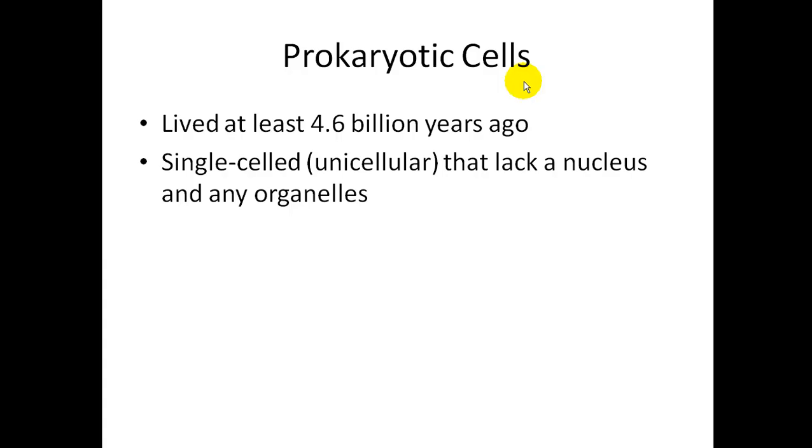There are two different types of cells: prokaryotic cells and eukaryotic cells. Prokaryotic cells we're actually going to learn in our next chapter because these are our bacteria cells. These cells lived a long time ago, they're the oldest cells around. They lived at least 4.6 billion years ago. They are single-celled, meaning they are unicellular, which means they are only one cell big. And they do not have a nucleus. That's what you need to remember right there. They lack a nucleus. So they don't have a nuclear membrane around the nucleus, and they don't have any organelles.